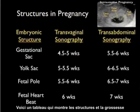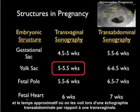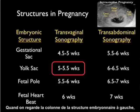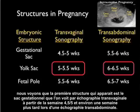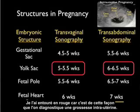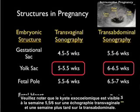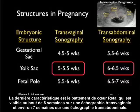Here's a table showing the structures in pregnancy and about the time they're seen on transvaginal versus transabdominal sonography. The gestational sac is seen on transvaginal sonography at about 4.5 to 5 weeks and about a week later on transabdominal sonography. The yolk sac is seen at about 5.5 weeks on transvaginal sonography and a week later on transabdominal — this is circled in red as it's the way we diagnose an intrauterine pregnancy. The fetal pole is seen at about 5.5 to 6 weeks on transvaginal sonography, and a fetal heartbeat is seen at about 6 weeks on transvaginal and about 7 weeks on transabdominal sonography.